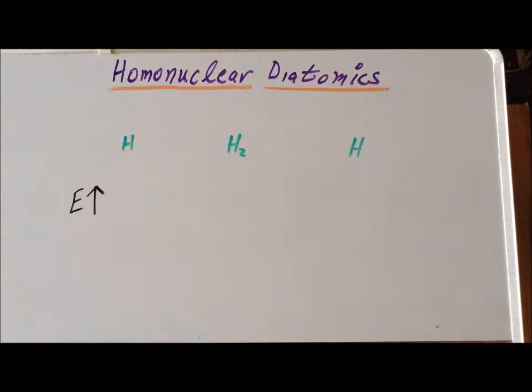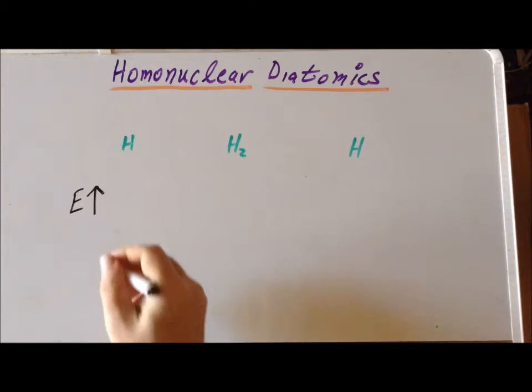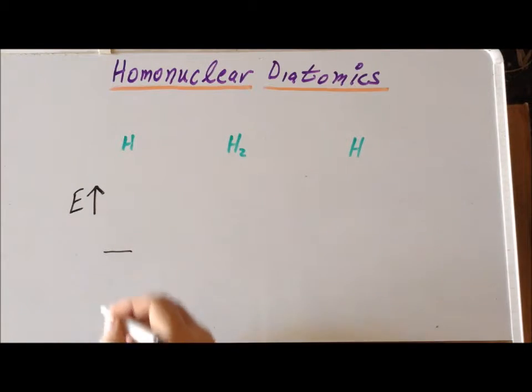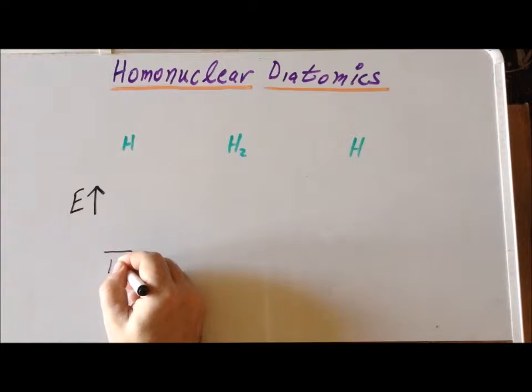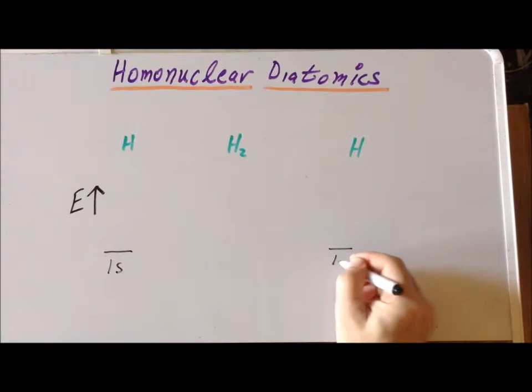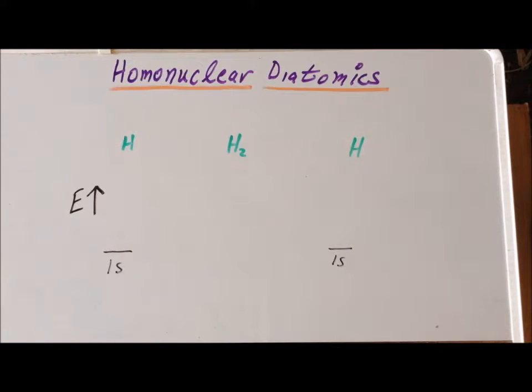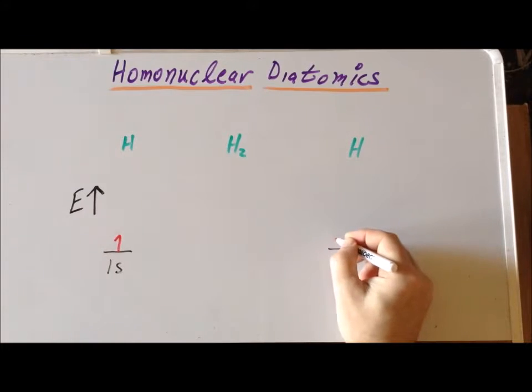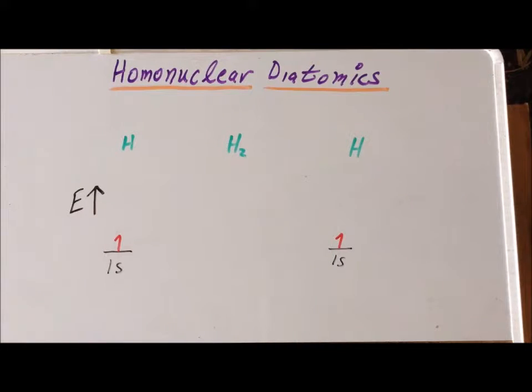Our first diatomic molecule to investigate is the hydrogen molecule H2. Recall that it is composed of two hydrogen atoms. For hydrogen, the valence orbital is a 1s orbital that is holding one electron for each atom. We're going to denote the electrons by red arrows.